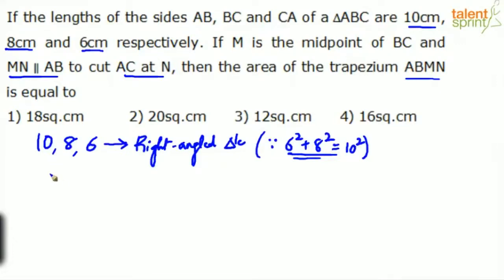So draw the triangle ABC. Let's say this is the triangle ABC. So sides are, I will say this is A, let's say A and let's say this is B and C. ABC. Sides are given 10, 8 and 6. So obviously this will be 10. Hypotenuse is always the largest. So this will be 10.